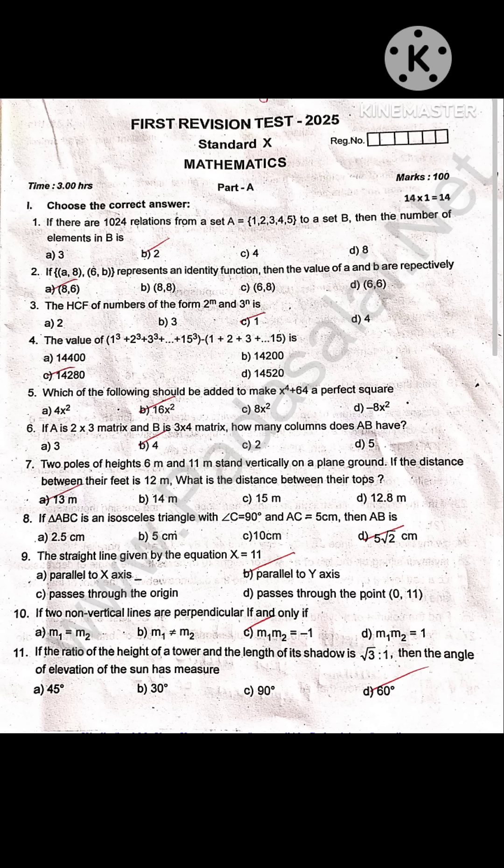If there are 1024 relations from a set A 1, 2, 3, 4, 5 to a set B, then the number of elements in B is 2.